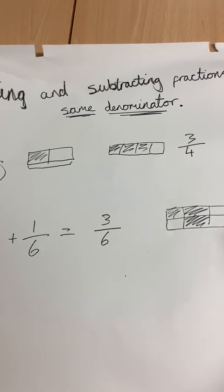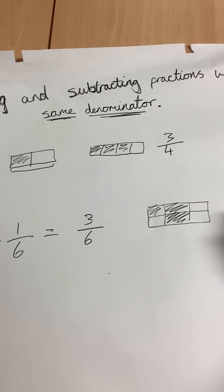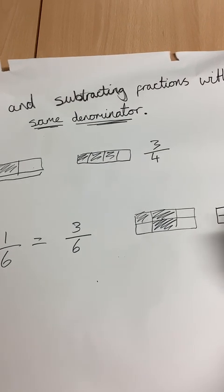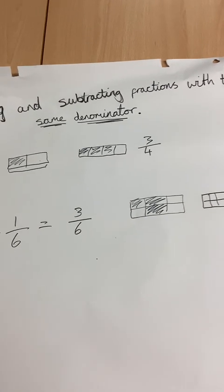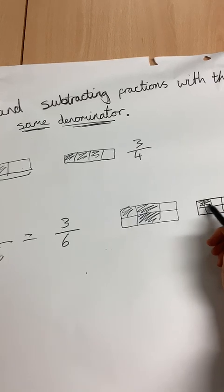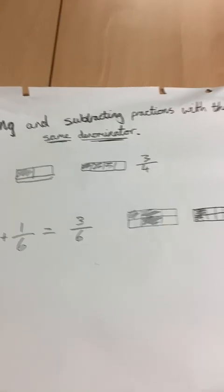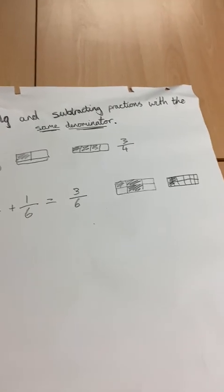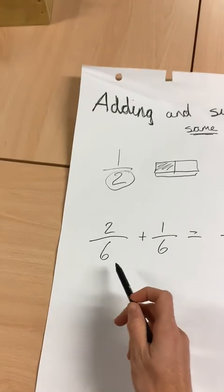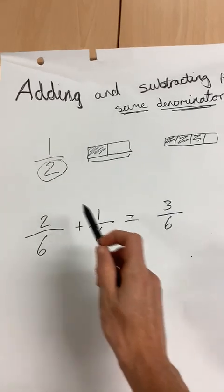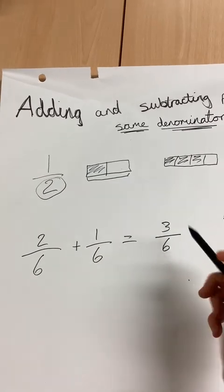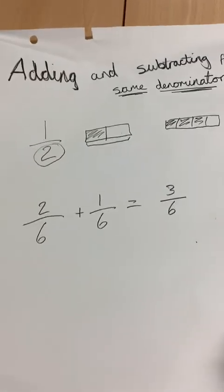which would look like that. And three twelfths is only a very small amount. You would end up with a lot less. So when they're the same denominator, you copy that across and you add the numerators. This is the same with subtraction.